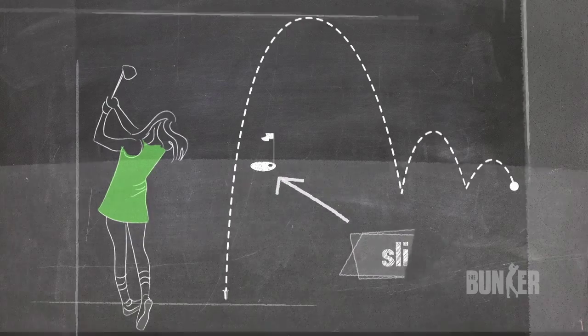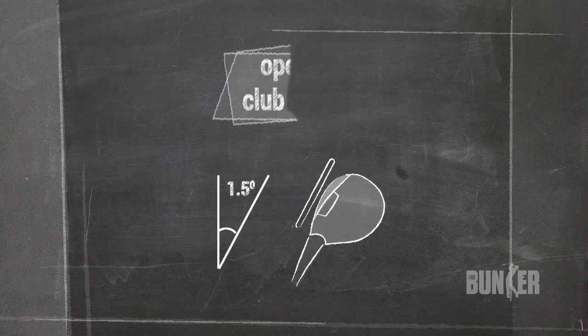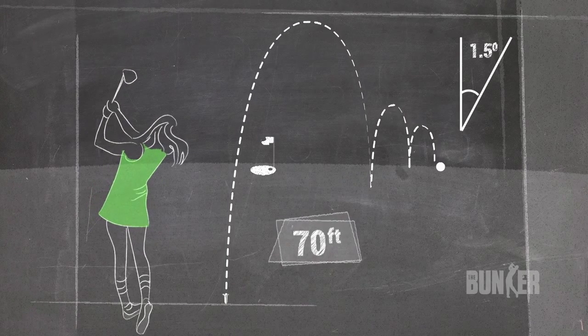The biggest culprit is an open clubface. Even if your path is perfect, leaving your clubface open just one and a half degrees can put you close to 70 feet off target.